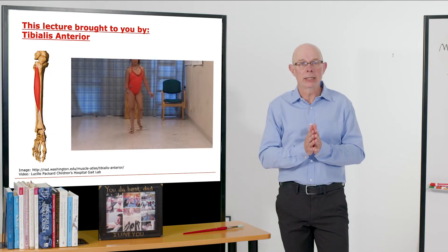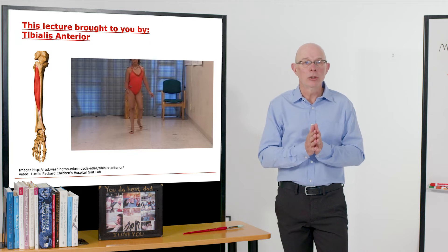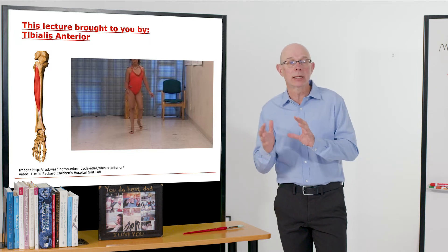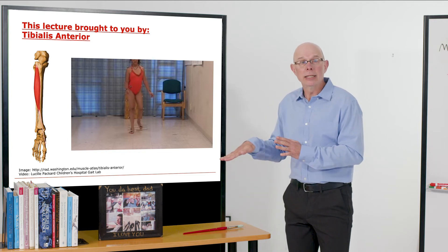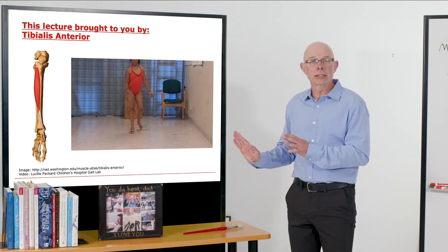So tibialis anterior is antagonistic to the gastrocnemius and soleus that we covered last time, in that those two muscles plantar flex the ankle and tibialis anterior dorsiflexes the ankle.